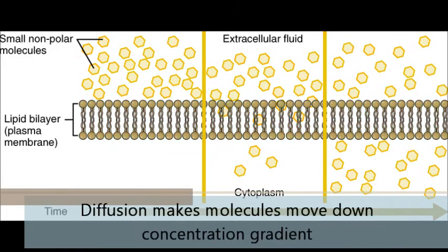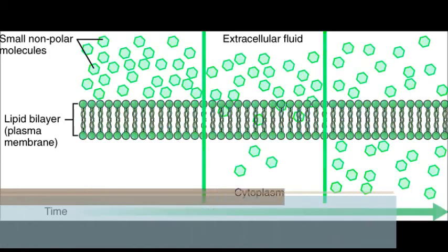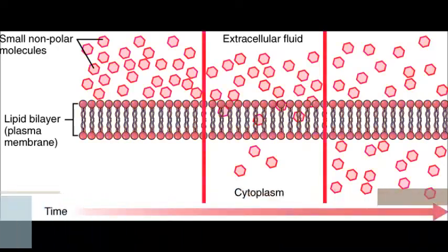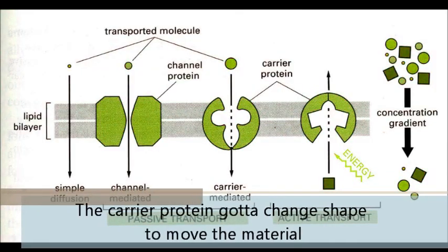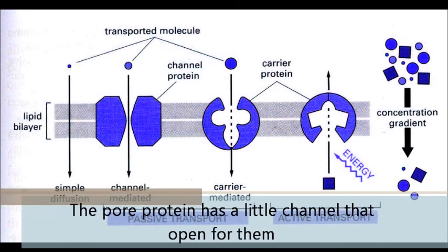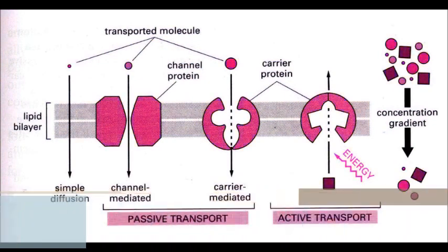Diffusion makes molecules move down concentration gradient. It depends on surface area and concentration. The carrier protein changes shape to move the material. The pore protein has a little channel that opens for them.